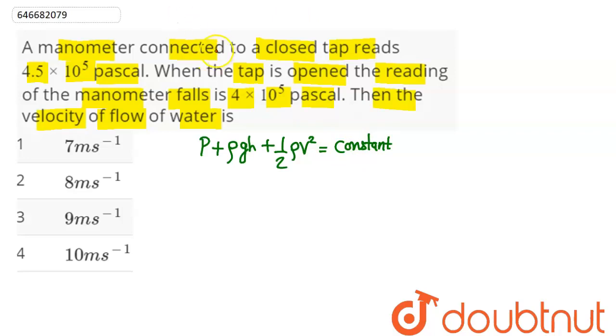at these two points when the tap is closed and when the tap is opened, we have the equation as p₁ plus - this tap here being at the same level - so this ρgh part will be equal to 0. Plus now when the tap is closed,